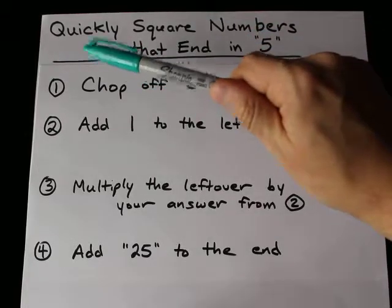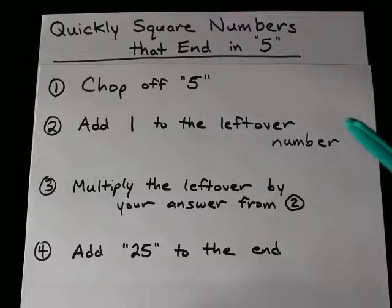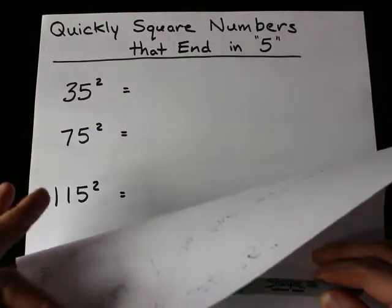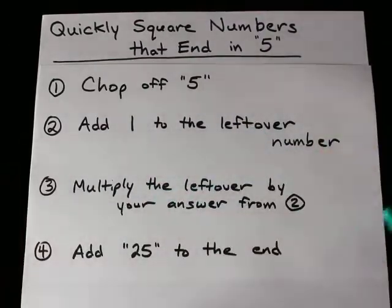Alright, our first trick is going to be quickly squaring any number that ends in 5. Calculating things like 35 squared, 75 squared, 115 squared really quickly.